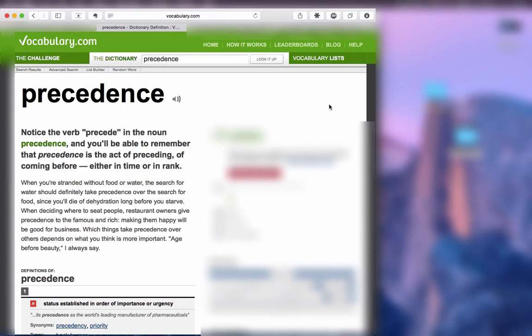So for non-native English speakers, it might confuse you. Thus I open vocabulary.com so that you can see what it means. It says, notice the word precede in the noun precedence and you will be able to remember that precedence is the act of preceding, of coming before, either in time or in rank.